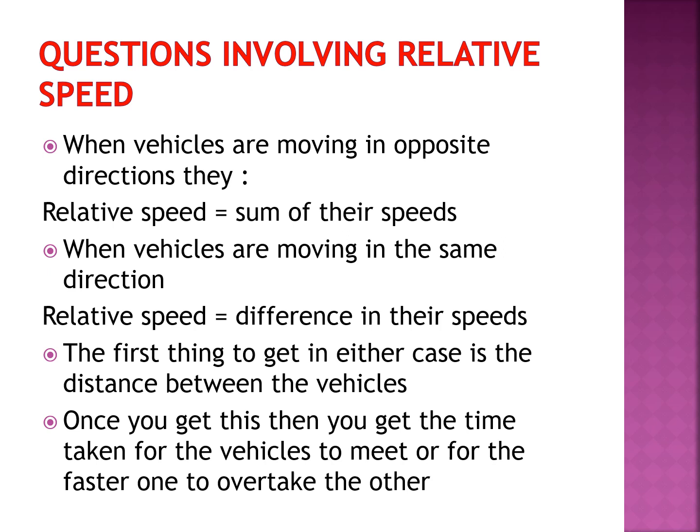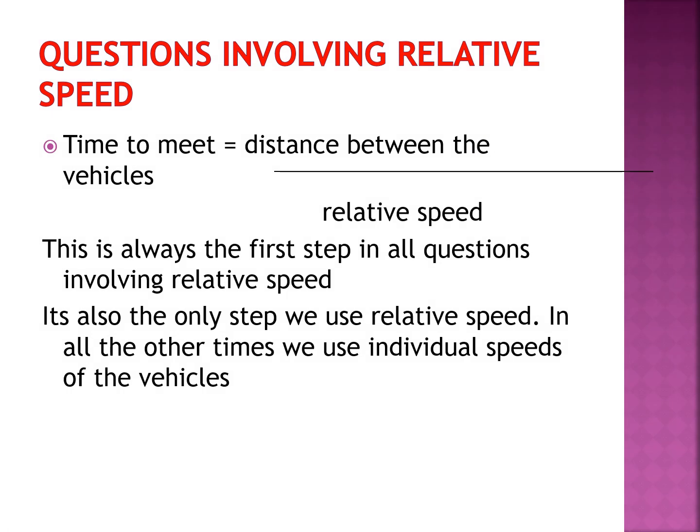Once you have the distance between the two vehicles, the time to meet — or for the faster vehicle to overtake the slower one — is: time = distance between vehicles ÷ relative speed. This is the only step where relative speed is used. After this, you use the individual speeds of the vehicles for any further calculations.